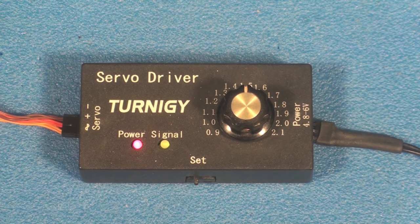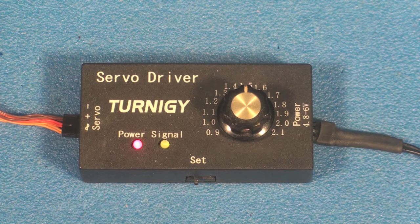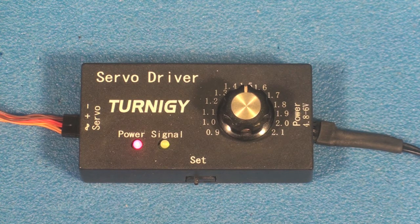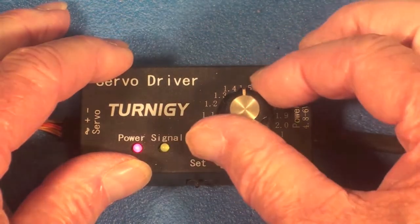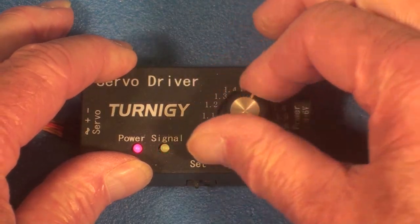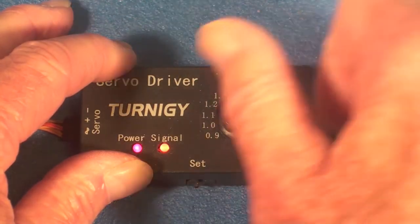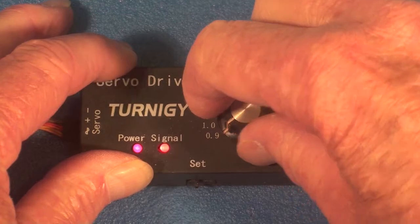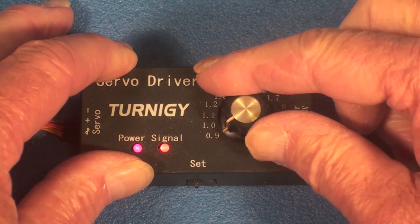The Turnigy servo driver again requires a 5 volt input, and basically it's manual. You have to set the controls of the servos manually. It will center them, but it has no auto control function on it.